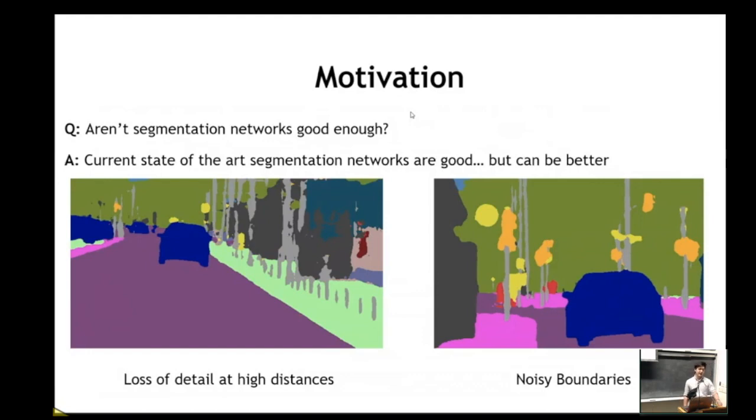On the left image, we see that objects at higher distances like the poles in the background and smaller objects like traffic lights and poles suffer greatly. This is not good because for applications like autonomous driving especially, we need to be able to see stuff at high distances to safely stop, especially at higher speeds. On the right image, we see that the network, even with a fine label ground truth, fails to predict accurate boundaries.